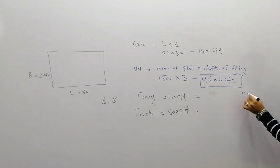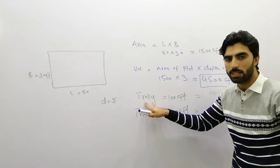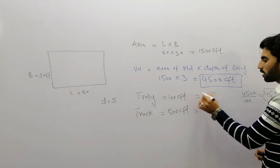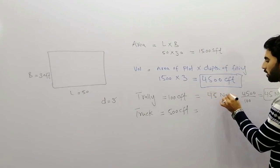So 4500 divided by 100, because 100 cft can carry one trailer. So it will give us 45 numbers. So we required here 45 trailers, 45 numbers.